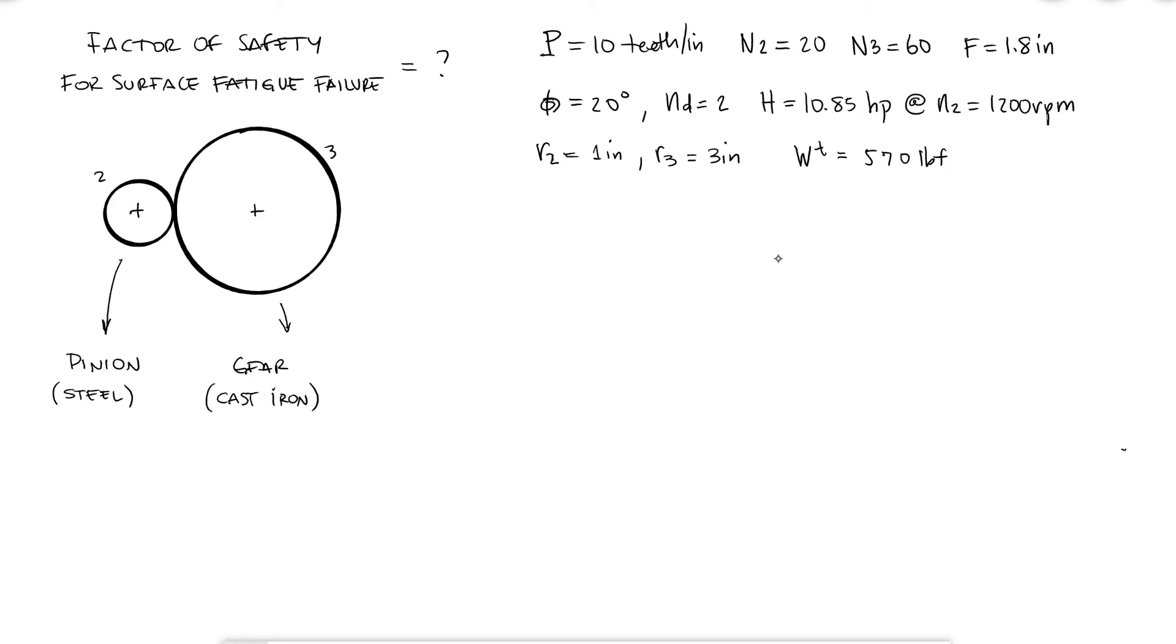Okay, so to solve for the factor of safety, we need two things, the surface endurance strength of cast iron, and the surface contact stress.